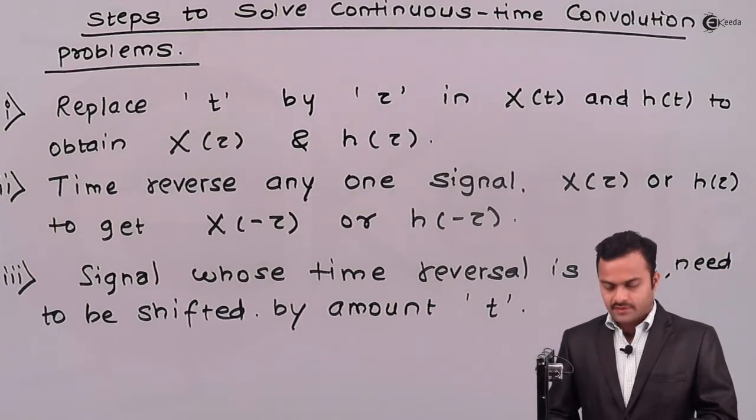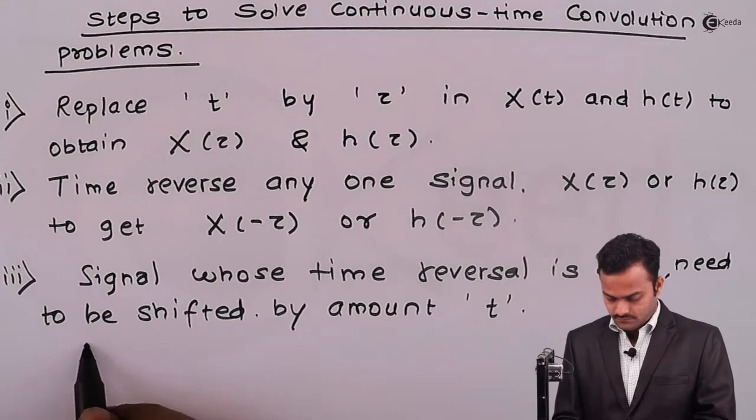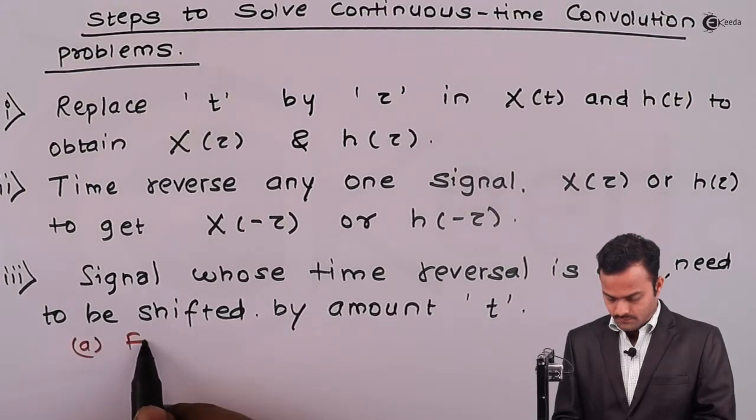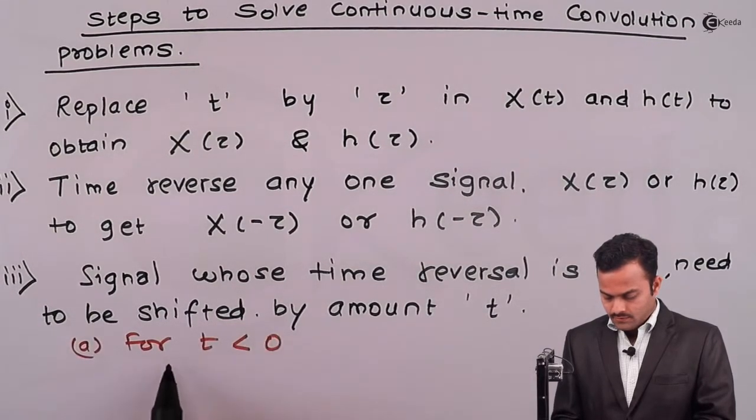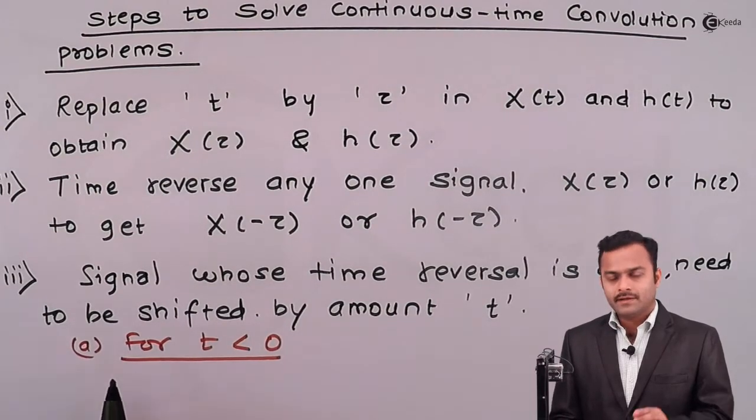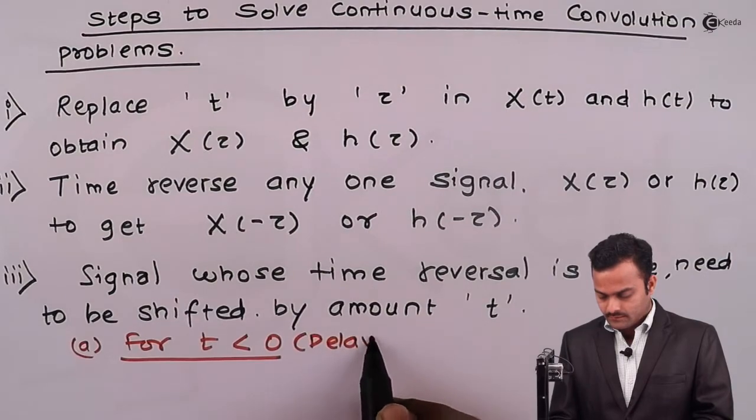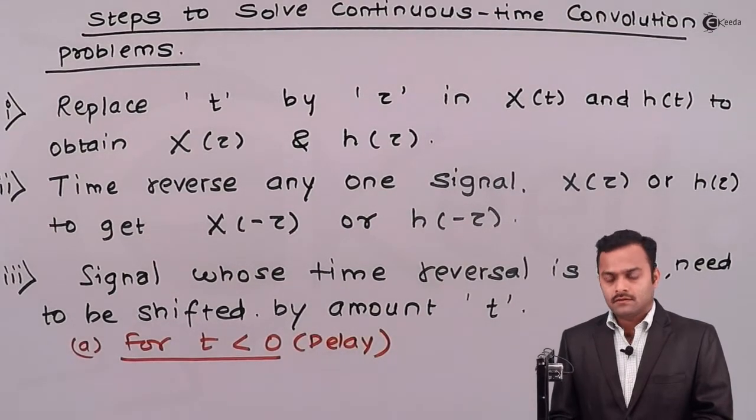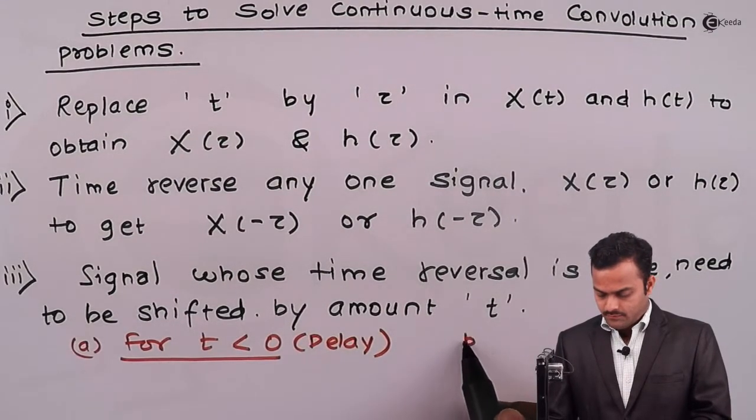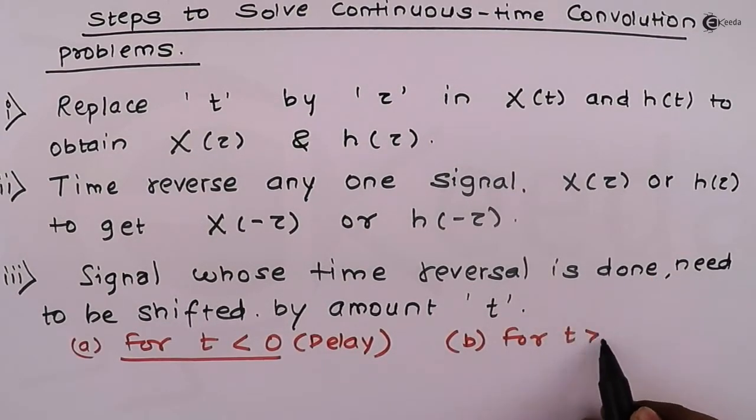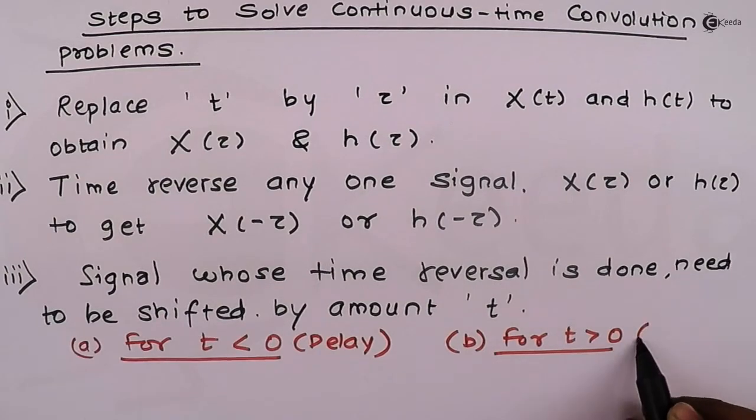So, this shifting we can have like this. For t less than 0, that means negative and negative means it is a delay. And part b is for t greater than 0, means it is advanced.